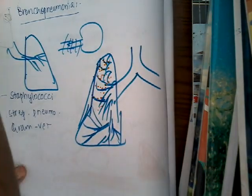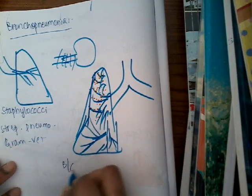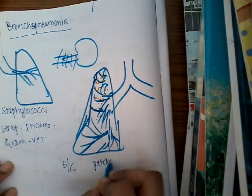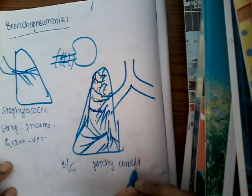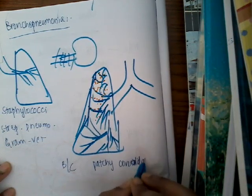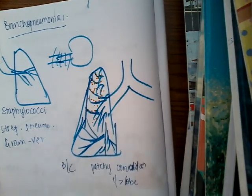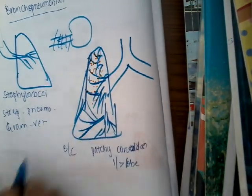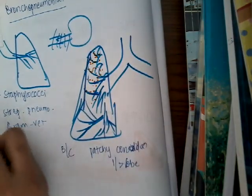This is found bilaterally, and it is patchy consolidation involving one or more lobes. If you see the affected surface, it is dry, granular, and firm.